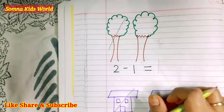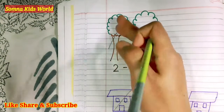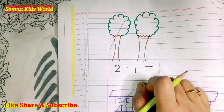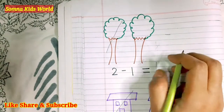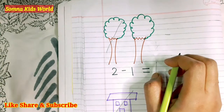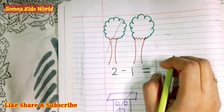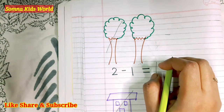So children, this is all about subtraction. Subtraction means to take away or to remove something from the total, and it is represented by the minus sign. This is all for today's class. Please follow me and subscribe to this channel so I can update you with more topics and concepts. Thank you for watching this video.